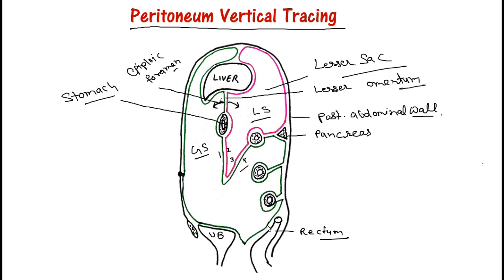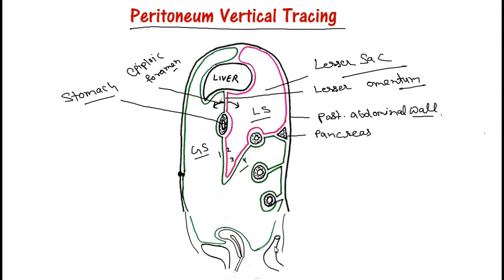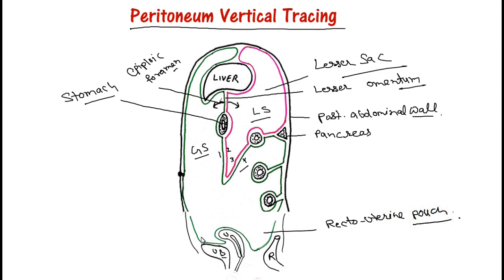On the inferior side, in the case of male, we have one pouch between the rectum and the urinary bladder — this is known as the rectovesical pouch. In the case of female, we have two pouches. Between the rectum and the uterus we have the rectouterine pouch, also known as the pouch of Douglas. Between the uterus and the bladder we have the uterovesical pouch. So in female we have two pouches, in male only one.